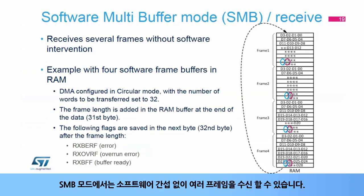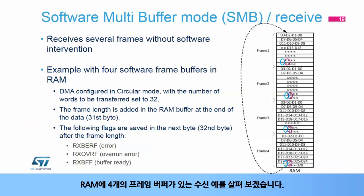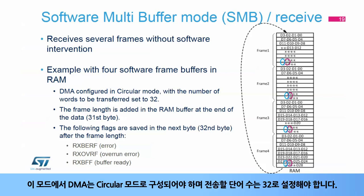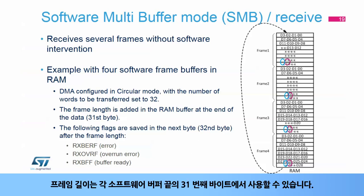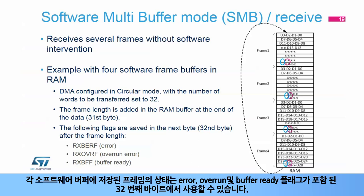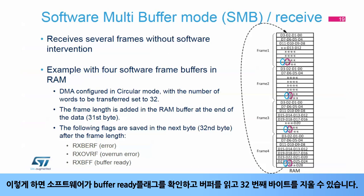In SMB mode, several frames can be received without software intervention. In this example for reception with four frame buffers in RAM, the DMA must be configured in circular mode and the number of words to be transferred must be set to 32. The frame length is available at the end of each software buffer in the 31st byte. The status of the frame stored in each software buffer is available in the 32nd byte, which contains the error, overrun, and buffer-ready flags. Software can check the buffer-ready flag, read the buffer, and clear the 32nd byte.